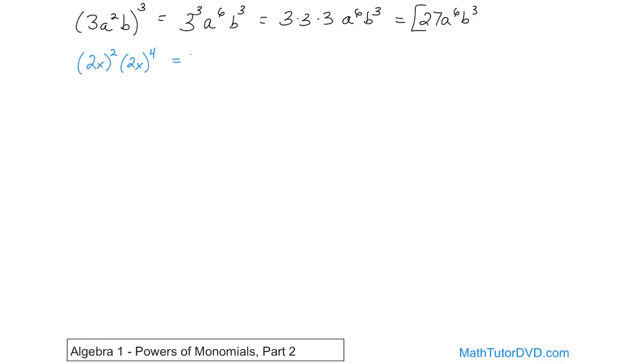So what we have is 2 raised to the power of 2 times x raised to the power of 2. That takes care of this, and then it's going to be multiplied by 2 raised to the power of 4 times x raised to the power of 4.